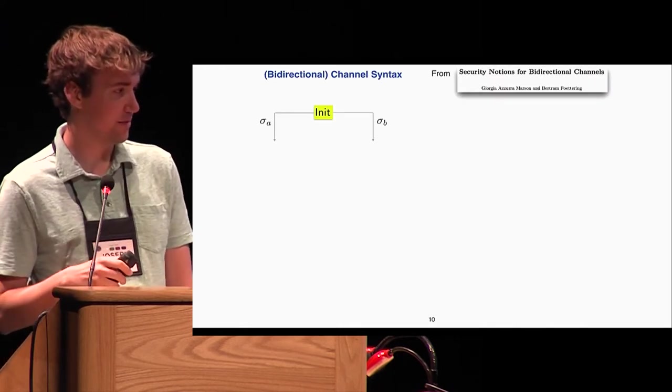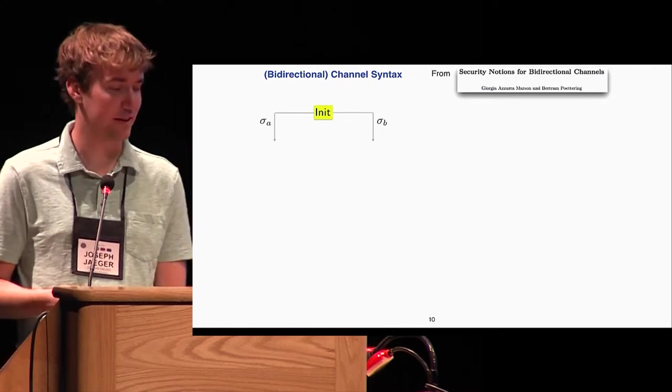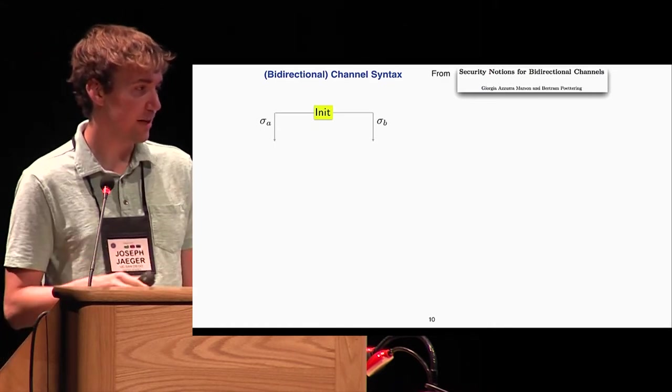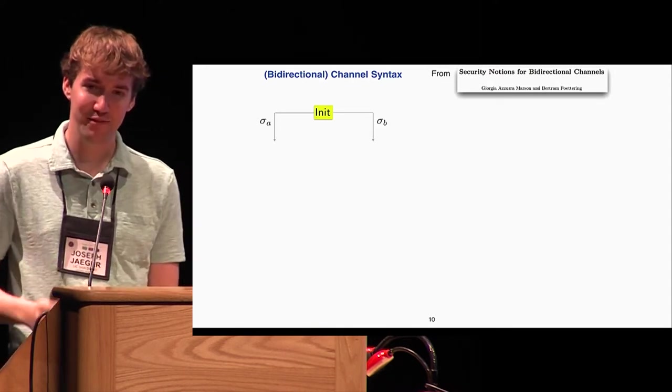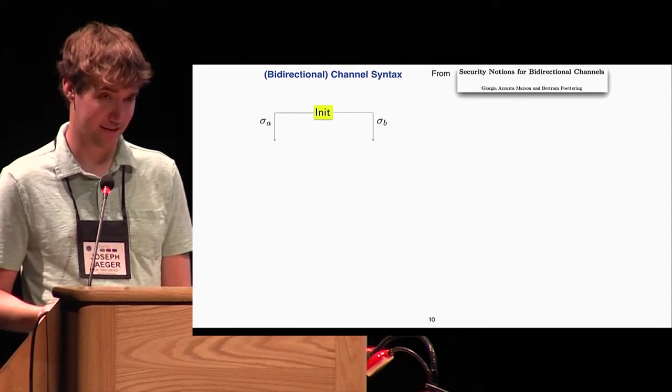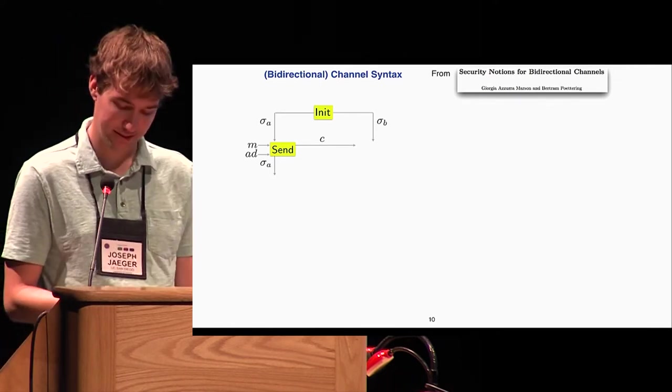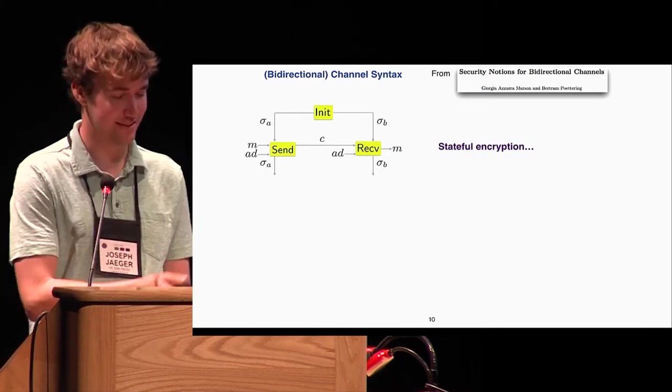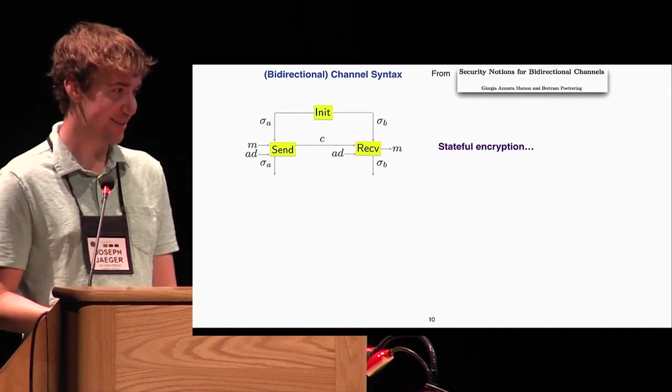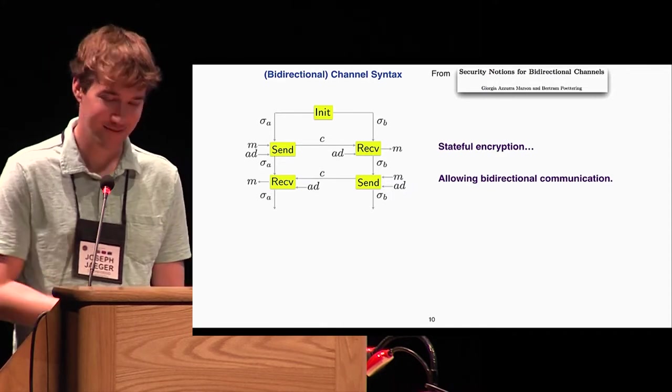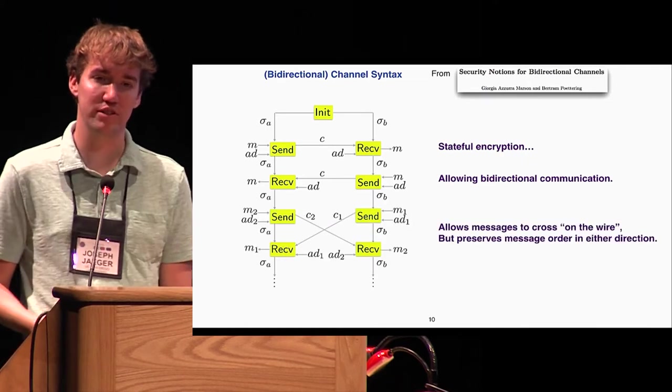So now to dig slightly more into the formalism. The kind of syntax of the object we use to study bidirectional communication is what's known as bidirectional channels, which were introduced recently by Marston and Protering. In particular it consists of three algorithms. First, an initialization algorithm which gives the initial state to both Alice and Bob. A sending algorithm given that state, a message, and some associated data produces a ciphertext. Then if we give the same associated data and the ciphertext to the other user, they can decrypt and recover the same message. Because communication is bidirectional, we want our primitive to work in both directions. And furthermore, we need our correctness to be maintained even if ciphertexts happen to cross each other on the wire.